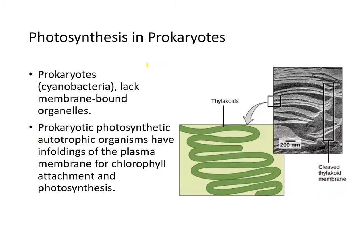How does photosynthesis occur in prokaryotes? Prokaryotes like cyanobacteria lack membrane-bound organelles. What they have instead are membrane folds called thylakoids — folds of membrane — and the spaces between these folds function as stroma. They use enfoldings of the plasma membrane for chlorophyll attachment and photosynthesis.